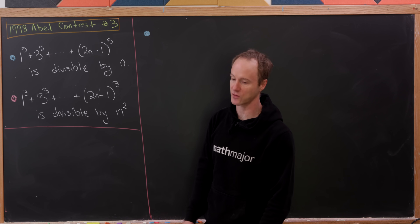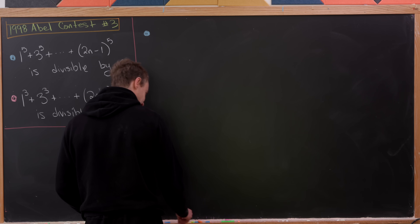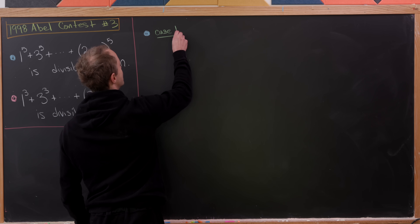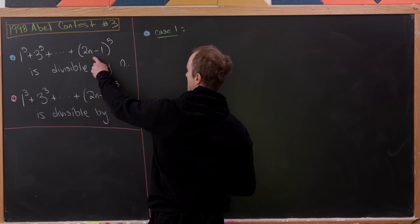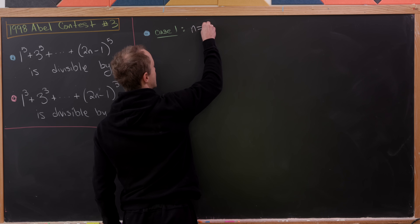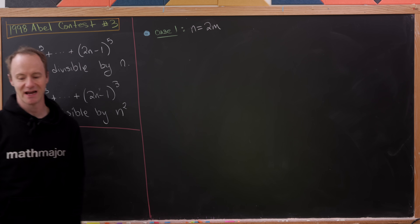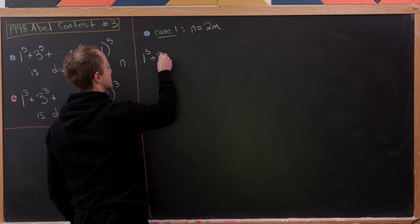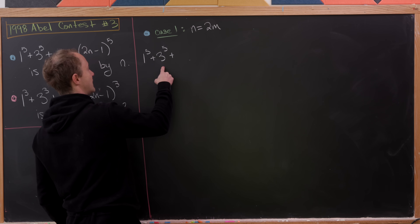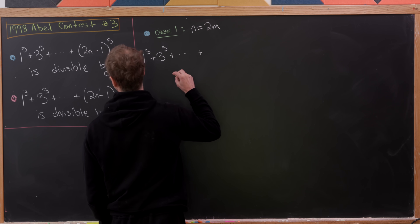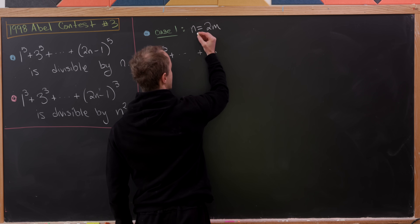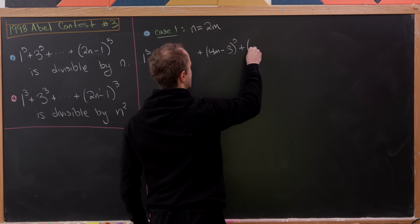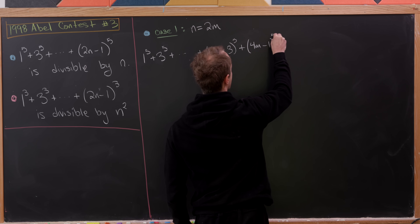Let's jump into the first part, which we'll break into two cases based on the evenness or oddness of n. The first case is when n is even, which means we can write it as 2 times m. In this setup our sum looks like: 1 to the fifth plus 3 to the fifth, all the way up to 4m minus 3 to the fifth, and then 4m minus 1 to the fifth.